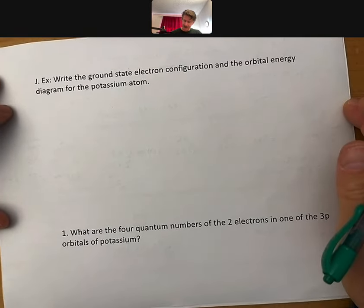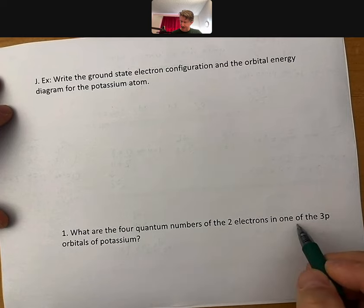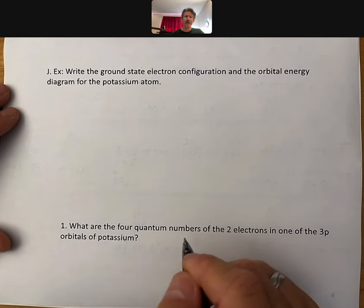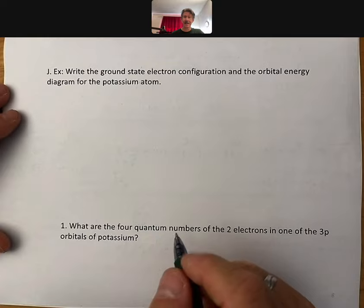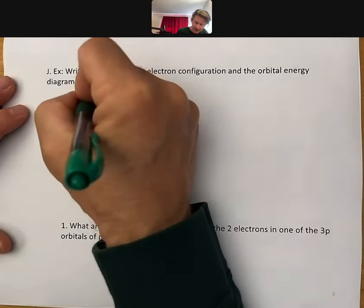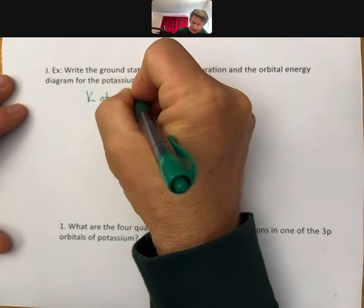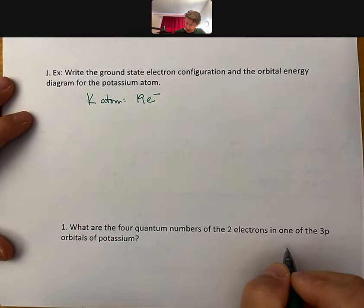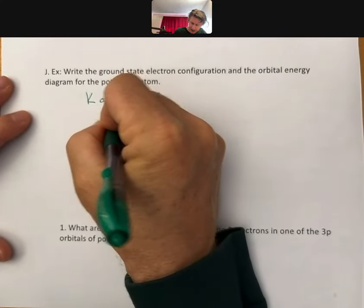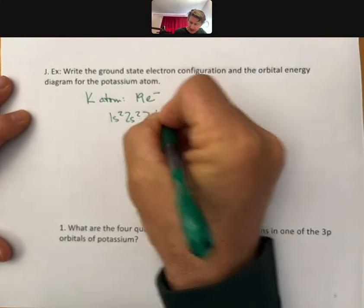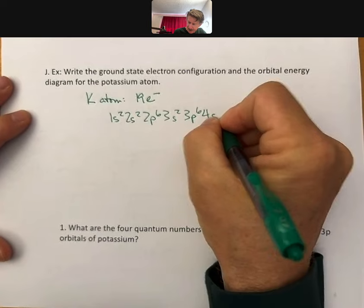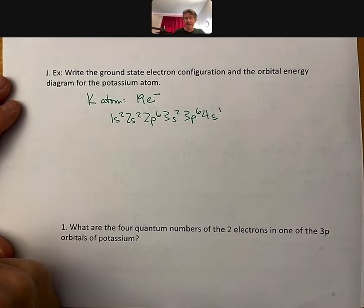And now, let's do the four quantum numbers for the two electrons in one of the three p orbitals of potassium. In order to do that, I am going to have to go ahead and write the ground state electron configuration for potassium. So, potassium is K. It is element number 19. It has 19 electrons. Those would be 1s2, 2s2, 2p6, 3s2, 3p6, 4s1. This is according to the shape of the periodic table. This is the correct answer. There is nothing in 3d.